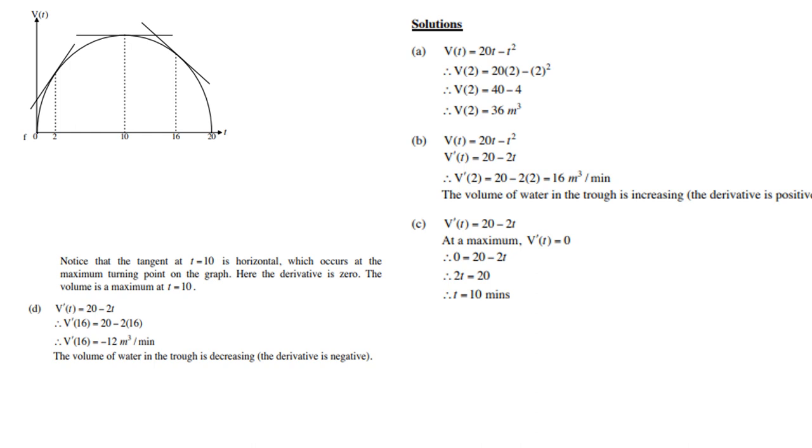And then, the last one, D. V'(t) is 20 minus 2t. Then, of course, replace t with a 16. And then, the volume V'(16) is a negative 12 cubic meters per minute. So, the volume of water in the trough is decreasing, because the derivative is negative.